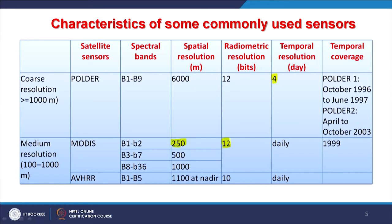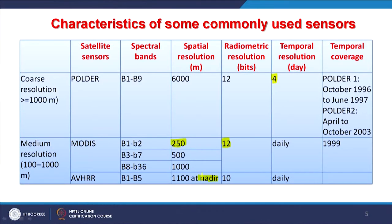AVHRR has 5 channels — 3 working in nighttime and 5 in daytime — with a resolution of about 1.1 kilometers at nadir. Its swath is about 2,800 kilometers, covering a very large area. Due to Earth's curvature over such a wide swath, the spatial resolution at the center of the scene is 1.1 kilometers or 1,100 meters. It provides data on a daily basis with 10-bit radiometric resolution. These are examples of relatively coarse and medium resolution sensors.